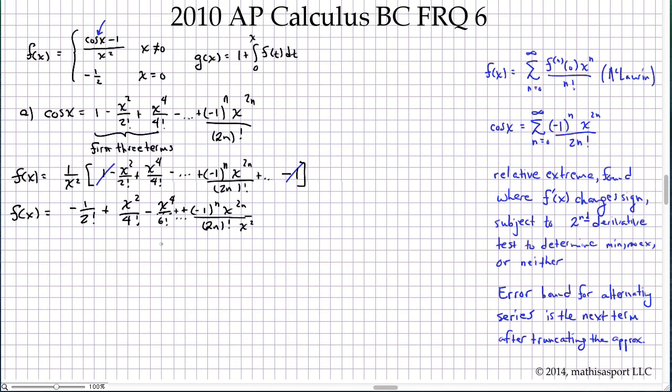For the general term, we can write it as negative 1 to the n, x to the 2n minus 2 over 2n factorial. I notice in the scoring guidelines they write it in an equivalent form, namely x to the 2n over 2n plus 2 factorial - they're simply moving the term over by 1. This is just as valid a description.